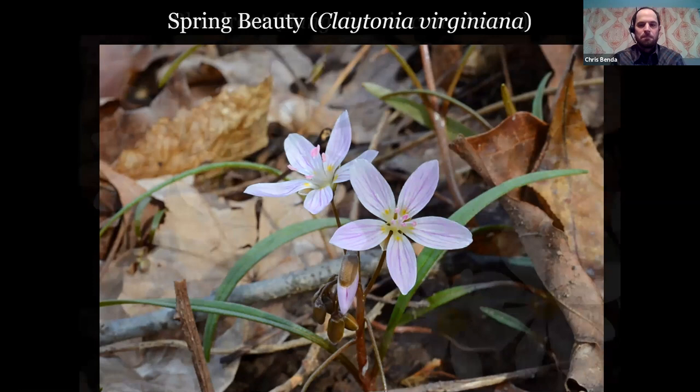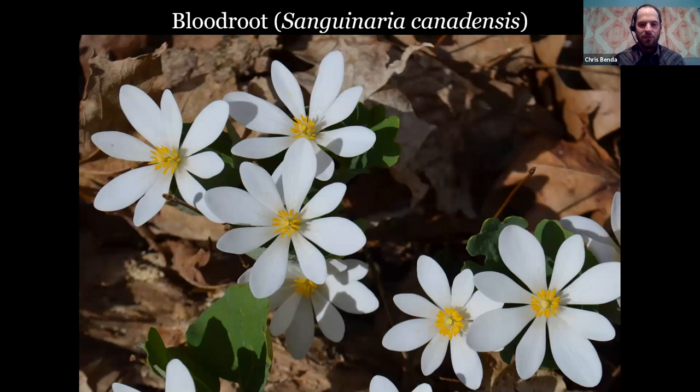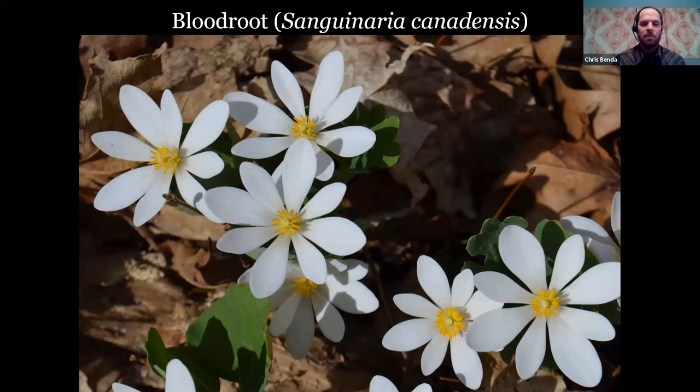Bloodroot is a remarkable wildflower. The flowers only bloom for a day or a couple of days — they sprout quickly, bloom, and then they're done. You can often find big patches of bloodroot, but you have to go out quick to find them. They have a uniquely shaped leaf and a sap in the stem that's like a deep orange. Sanguinaria alludes to that blood name, and this dye was used for dyeing fabric, war paint, and various uses.